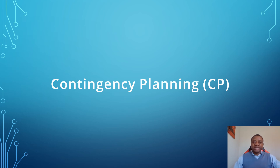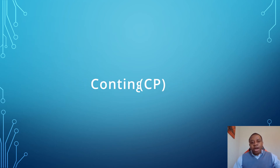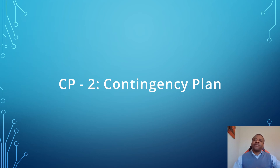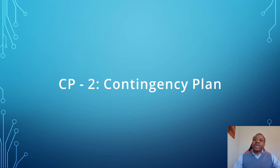We'll be looking at some of the controls that fall under the contingency planning control family. I'll be looking at CP2, the contingency plan. CP2 seeks to identify the essential mission and business functions as well as the procedures for restoring those business missions to full operation following a disaster. It also seeks to identify the maximum tolerable downtime, the recovery time objective, and the recovery point objective for the business mission of the organization. It also seeks to identify the contingency plan roles and responsibilities, and the individuals to contact in the event of a disaster.